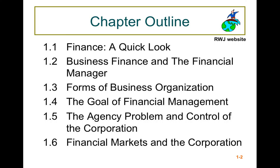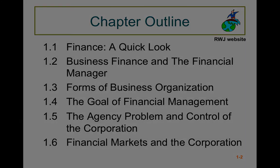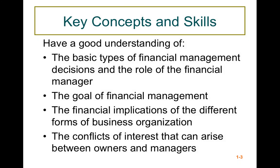This chapter outline covers: first, a look at finance; then business finance and the financial manager; different forms of business organization; the goal of financial management; the agency problem and control of the corporation; and finally financial markets and the corporation. What we want to take away includes a basic understanding of financial management decisions and the role of the financial manager, the goal of financial management, the financial implications of different forms of business organization, and conflicts of interest that can arise between owners and managers.